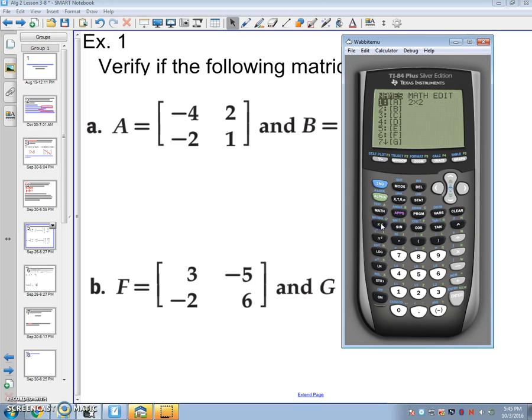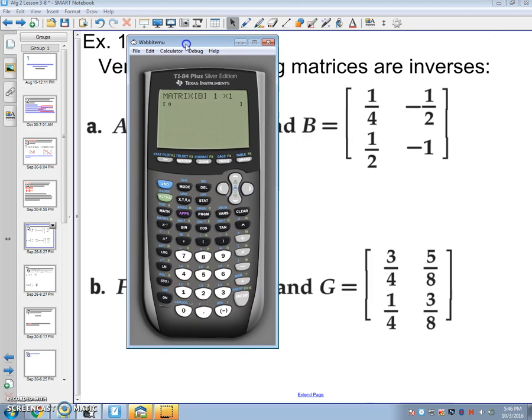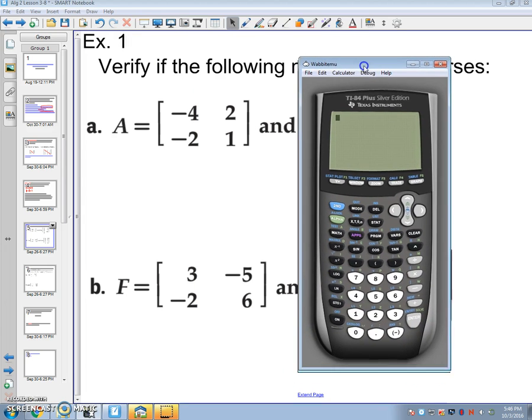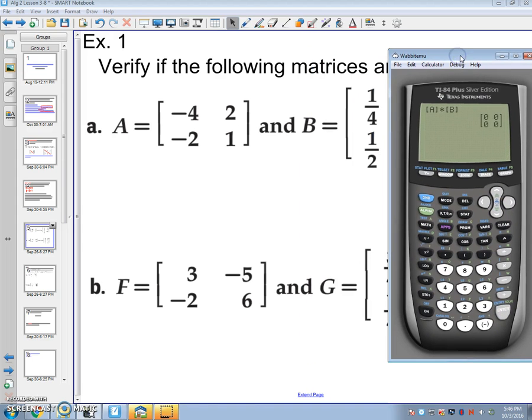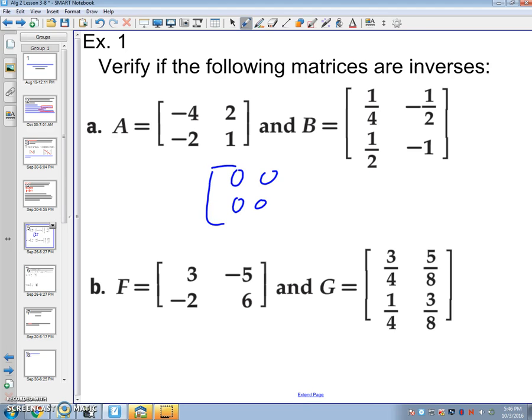Again, go back to second matrix. I'm going to go over B now. Edit B. And B says it is a 2 by 2. It is a fraction, so 1 divided by 4, this is negative 1 divided by 2, this is 1 divided by 2, and this is negative 1. Second quit. Now, to multiply, you just go back to second matrix. I'm going to do A times second matrix, go down to B. A times B gives me 0, 0, 0, 0. Now, is that the identity matrix? That is not. So they are not inverses. It doesn't give me the identity. It has to have 1s going down the first diagonal.